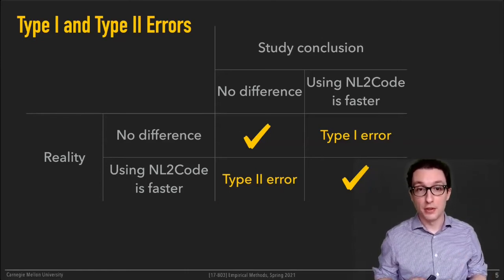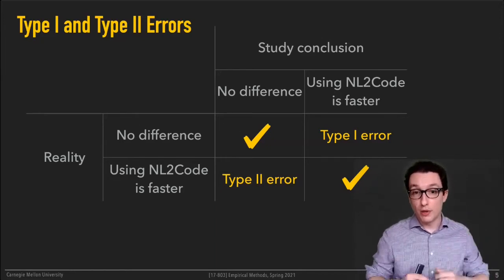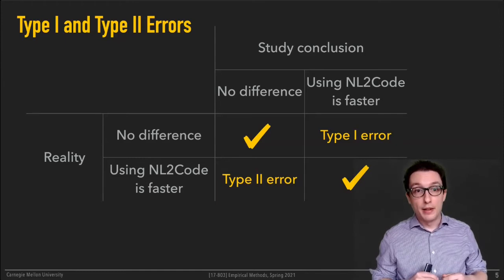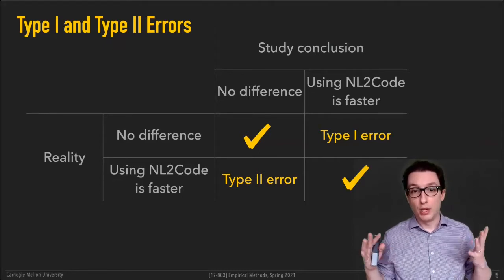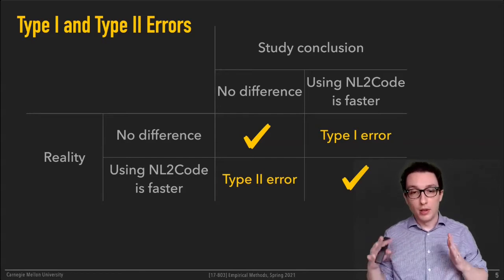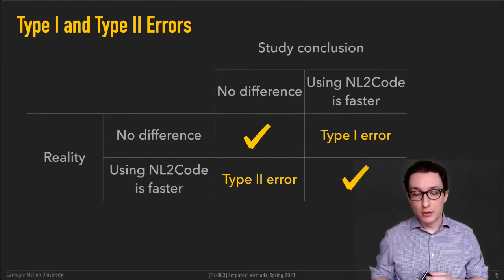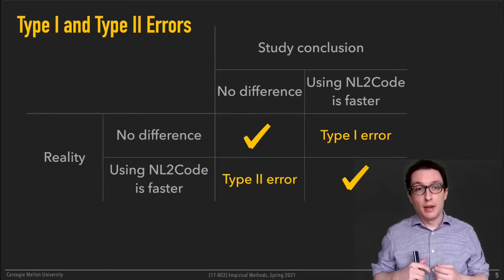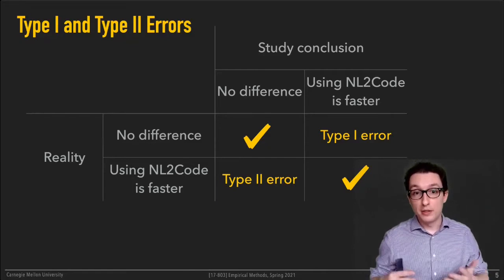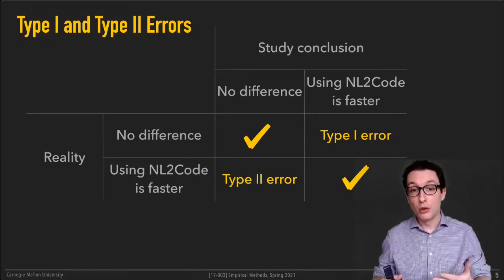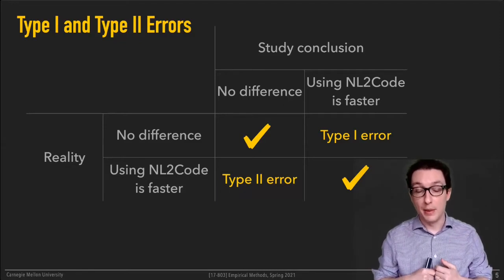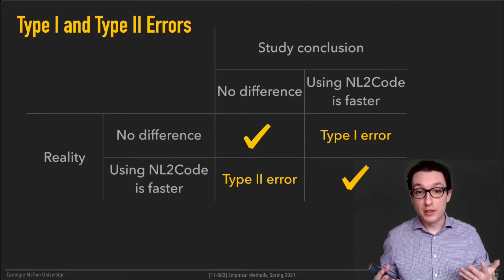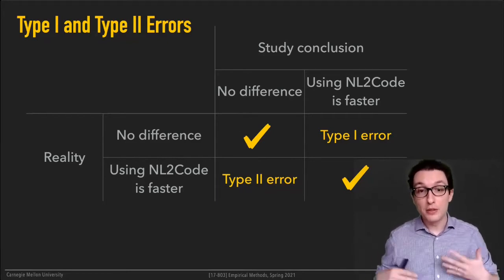The opposite — the bottom left case — is when there should have been a difference: we know for whatever reason that people should be faster when writing code using the tool than writing it from scratch, but your experiment is not able to detect that. That's called a false negative. Your conclusion is falsely negative — you would conclude based on your experiment that there's no difference and that the tool is ineffective when that's not the case. It would be a falsely negative conclusion.